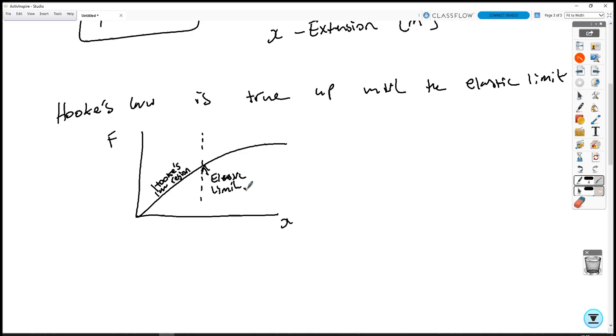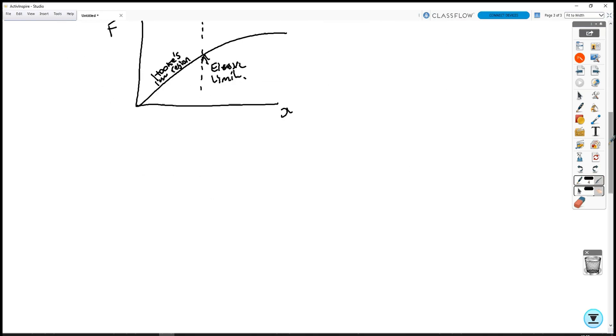The spring constant tells you how strong a spring is or how stiff a spring is. Sometimes they call it the stiffness constant. A strong spring has a big spring constant.